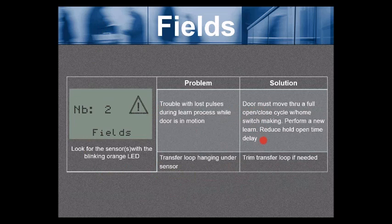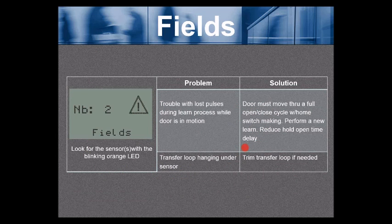So if you have an extended hold time on your door control, you want to turn that down. You don't want the door to stay open too long and then the system will just time out and you'll see a fields error.